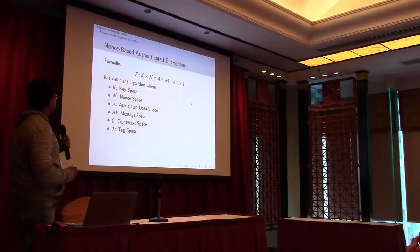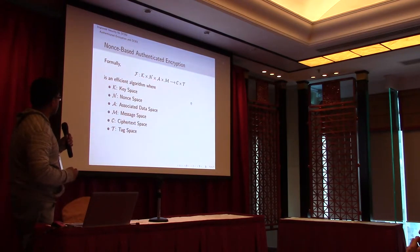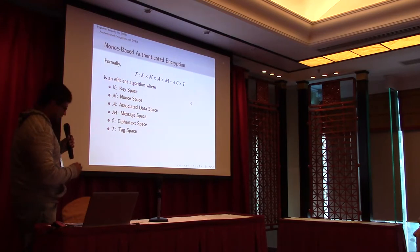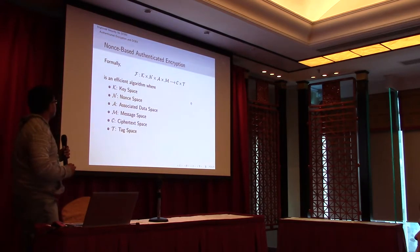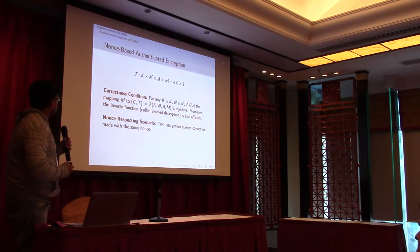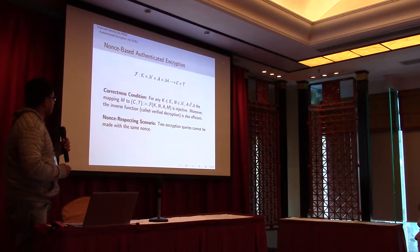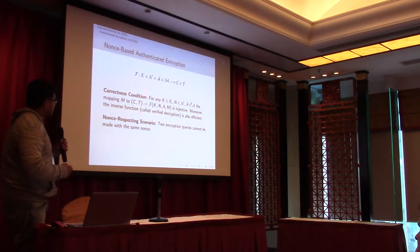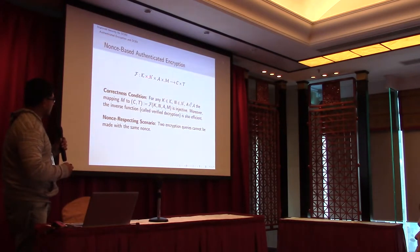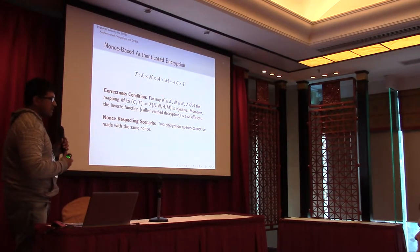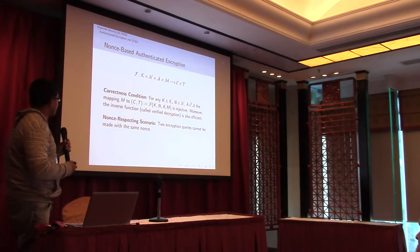So this is the formal definition of any nonce-based authentication encryption scheme. Basically it takes four inputs: key, nonce, associated data, and the message, and it outputs a ciphertext and a tag. For any nonce-based authentication encryption scheme, first of all, we need to have a correctness condition, which is basically if we are encrypting and decrypting truthfully, we will get back the same message when doing the verified decryption.